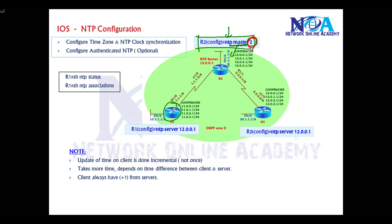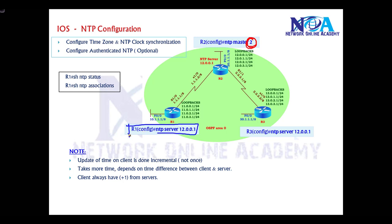The value 2 represents the stratum value. If you don't define it, IOS by default uses a stratum value of 7. We can use any number other than 0 and 1. Here I'm giving a stratum value of 2. The other devices, Router 1 and Router 3, will be configured as NTP clients.